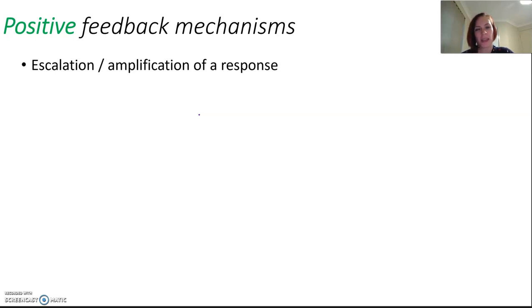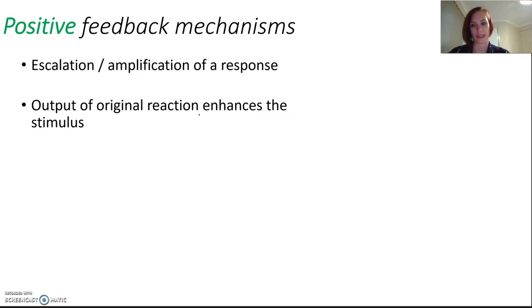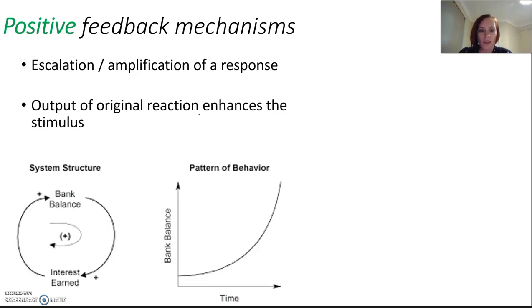Positive feedback mechanisms are the amplification or escalation of a response—kind of a strange vicious cycle. The output of the original reaction enhances the stimulus. One way you're probably familiar with is when you buy a bunch of bananas. Bananas produce this chemical called ethylene when fruits ripen. The banana is ripening, producing ethylene, and that ethylene promotes the other bananas around it to ripen as well. It's really easy to overripen your bananas because they're all spitting out this ethylene and ripening each other until two days later you've got brown bananas.